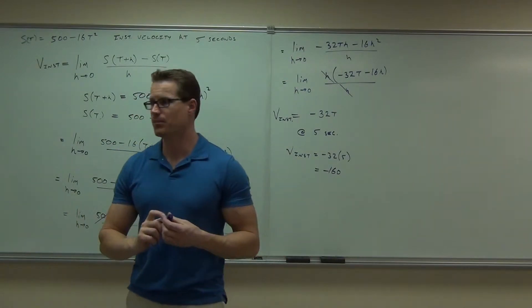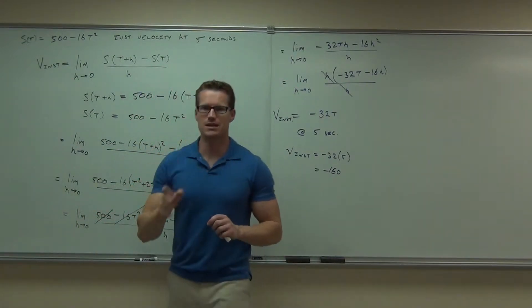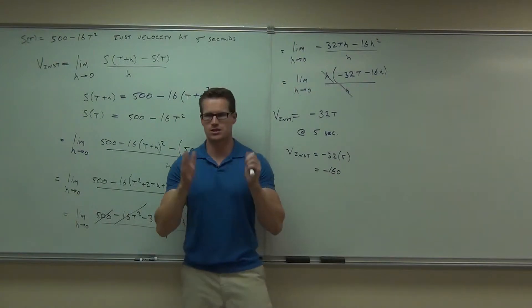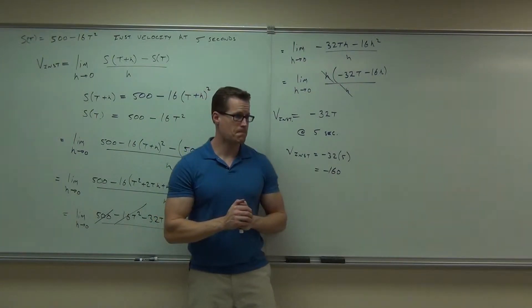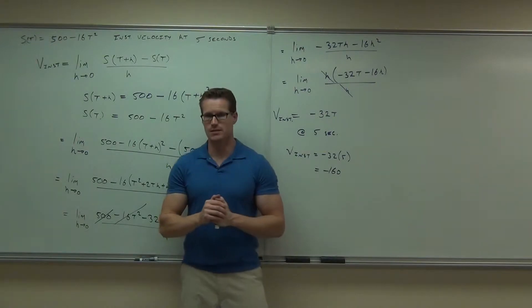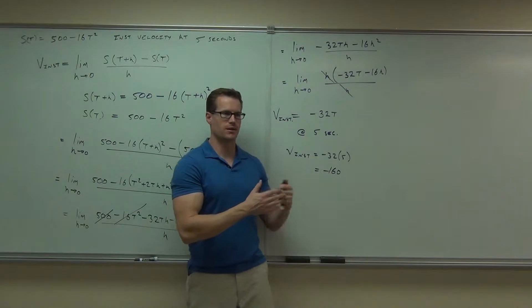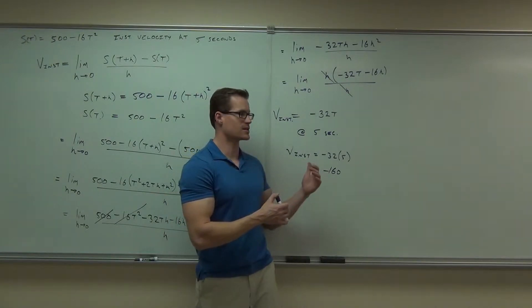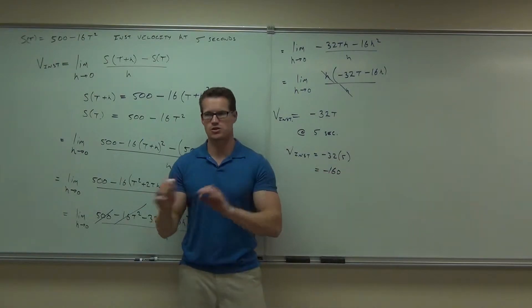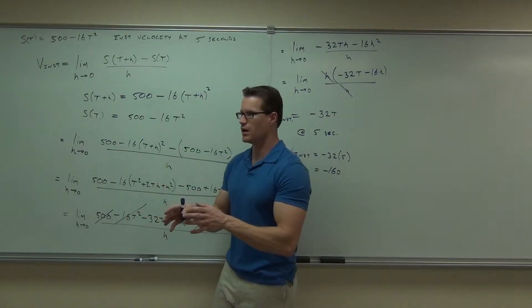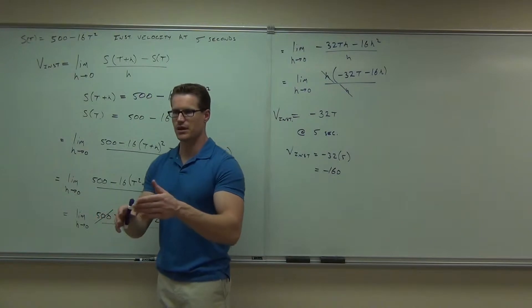Same exact thing. Same sign, even. By the way, how would you get speed from this? This is a velocity. How do you get speed? So what's the speed here? 160 feet per second. So speed doesn't have a direction. Velocity does. So if you get a question that says, what's the instantaneous speed? Well, you just take your absolute value of your instantaneous velocity, and you'll get the speed. It's just the magnitude of that vector, not the direction.